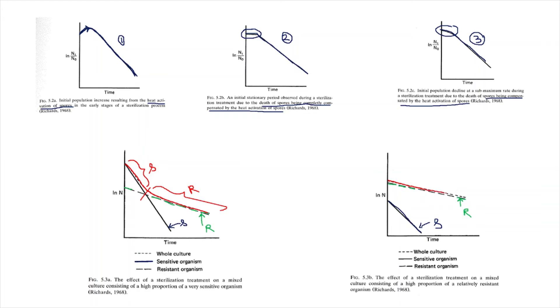In another scenario where the number of resistant organisms is much higher, the sterilization kinetics of the entire media will mirror the resistant organisms. The sterilization curve will be entirely due to the destruction of the resistant population and not the sensitive population. In general, the sterilization curve follows the nature of the curve whose population is higher.